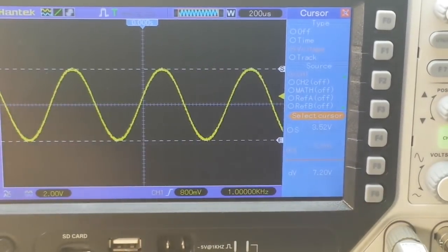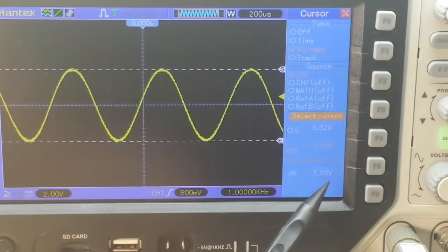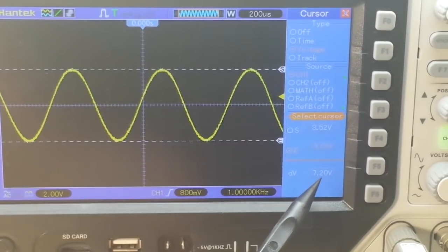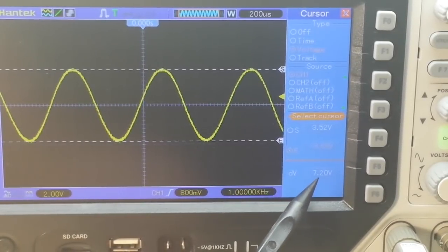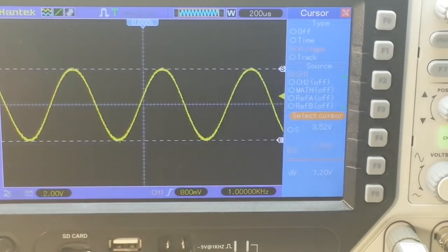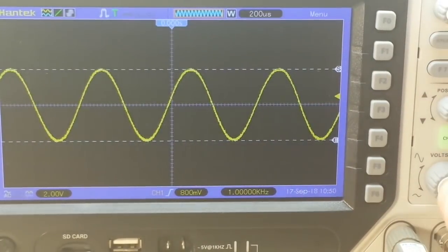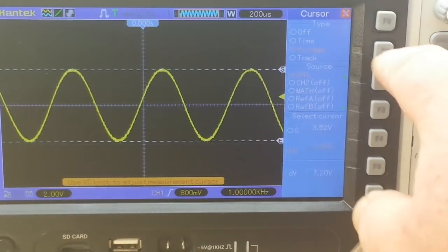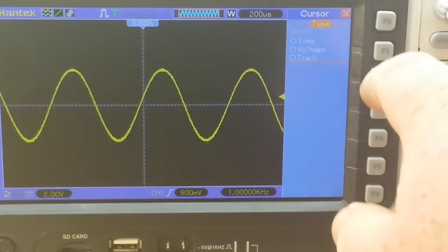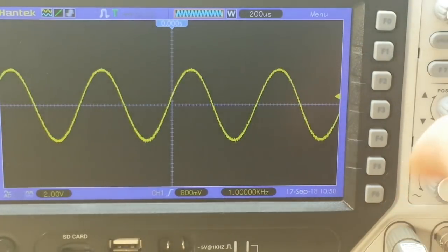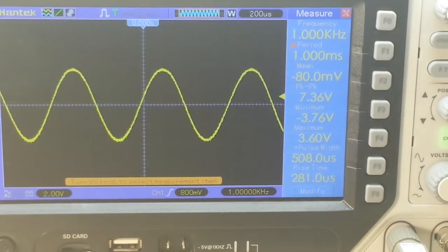There we go. So our 2 volt peak to peak, or the 1 volt peak to peak that we fed in, is now 7.2 volts peak to peak. Cursor off, I'm still getting used to this new scope. Hit measure, there we go. So that is our common emitter amplifier.